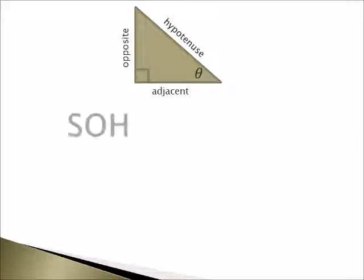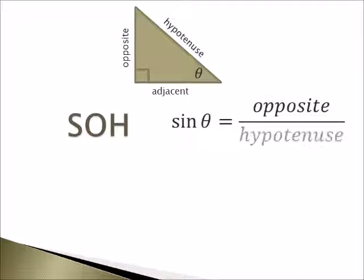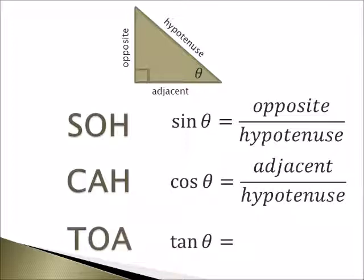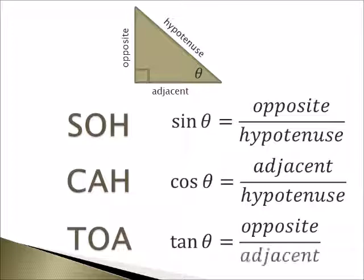Now let's talk about SOHCAHTOA. SOH stands for sine of theta is equal to opposite divided by hypotenuse. CAH represents cosine of theta is equal to adjacent divided by hypotenuse. Lastly, TOA represents tan of theta is equal to opposite divided by adjacent. So SOHCAHTOA is just an acronym that is used to help you remember your trig functions.